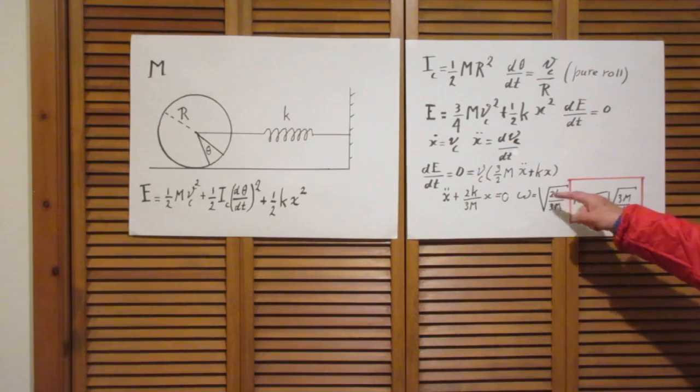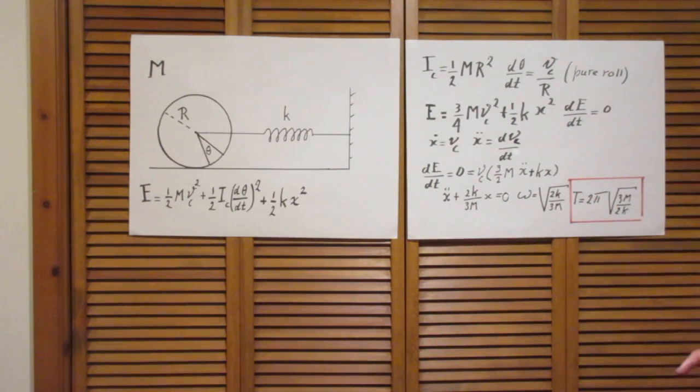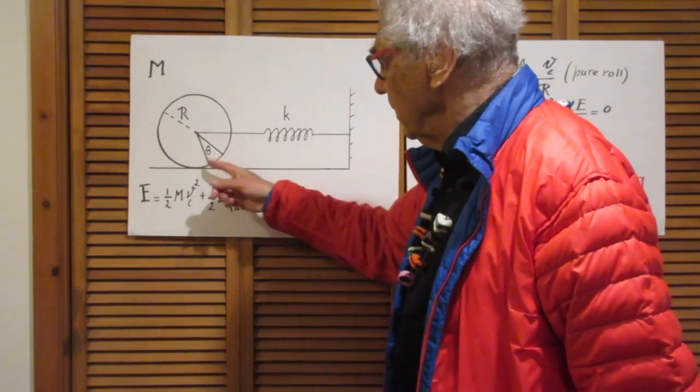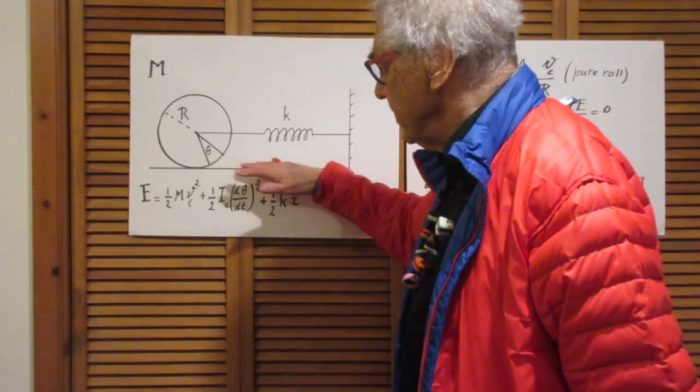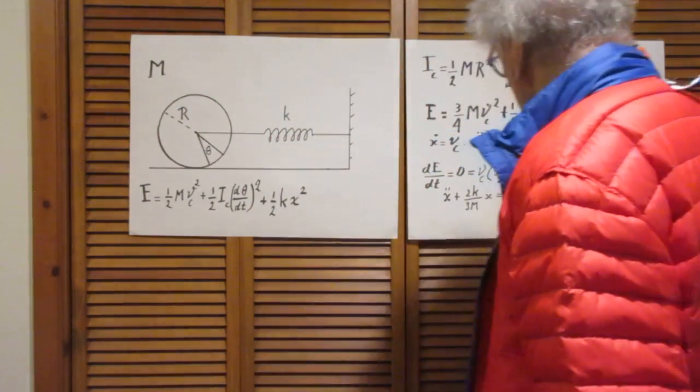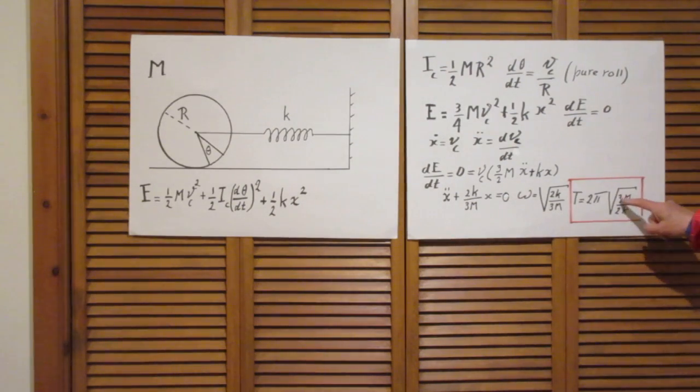Omega is the square root of 2k over 3m. So the period, and that's what I asked you, is 2 pi times the square root of 3m over 2k. Just as a reminder, if this was just an object which was sliding here on a frictionless surface with mass m, then this wouldn't be 3m over 2k, but m over k.